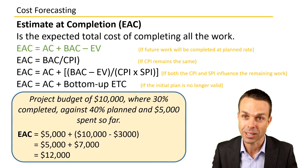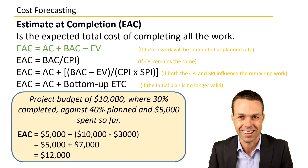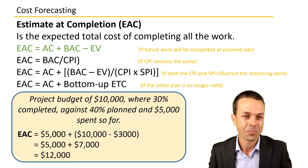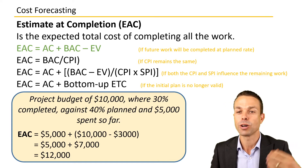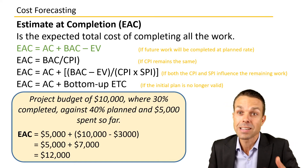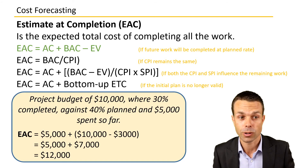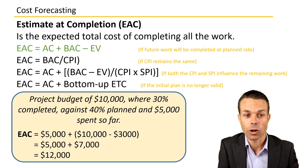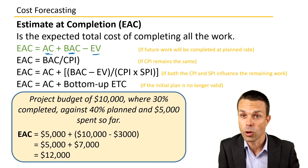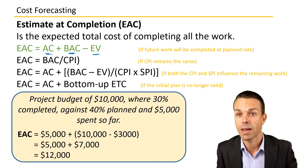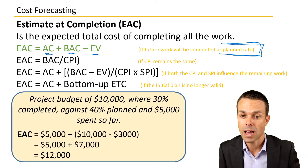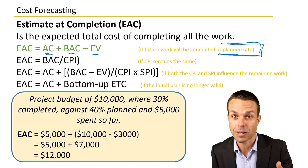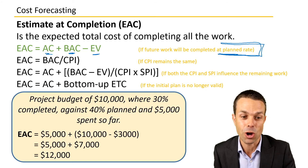Let's jump into Estimate at Completion and the many different ways you can calculate it. The EAC is the total expected cost of completing all the work. The first formula is: actual cost plus budget at completion minus earned value (AC + BAC − EV). This is used when everything is expected to be completed at the planned rate — no matter what's happened, we still expect things to proceed as originally planned.